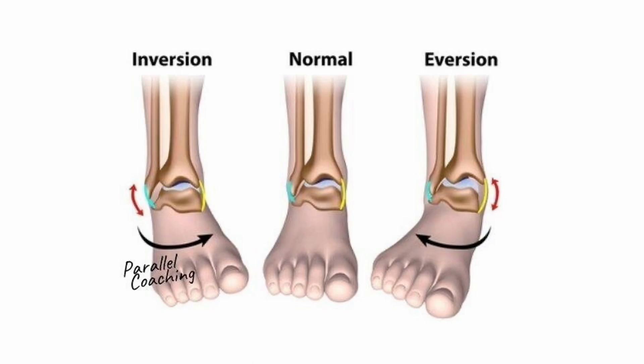The most common and potentially debilitating mechanism of injury to the ankle ligaments is inversion of the foot. With this mechanism of injury, the anterior talofibular ligament is the first or only ligament to sustain injury. A total rupture involves the calcaneofibular ligament and the posterior talofibular ligaments. An eversion injury will cause damage to the deltoid ligaments, while a hyperdorsiflexion trauma might cause an injury to the syndesmotic ligament.